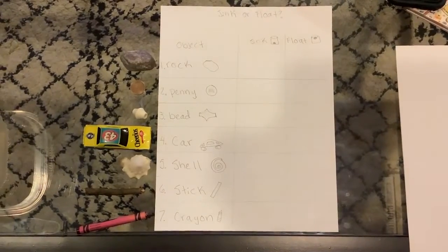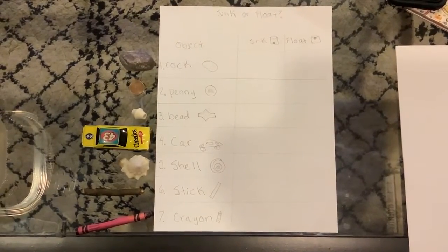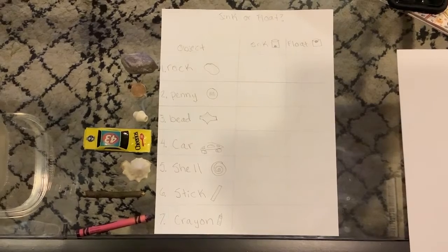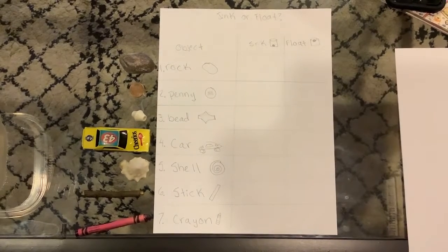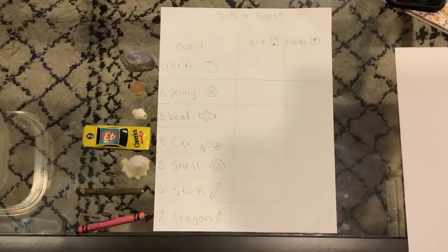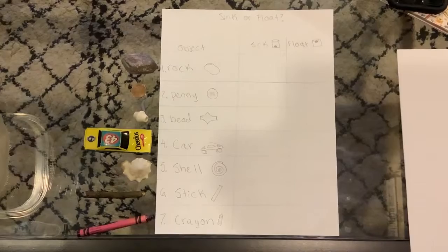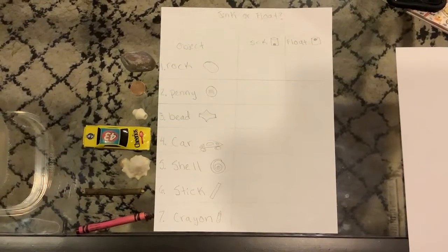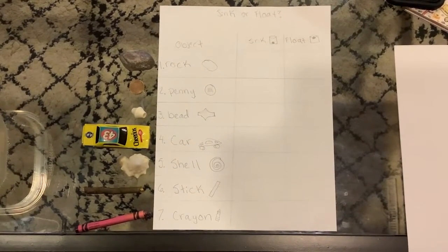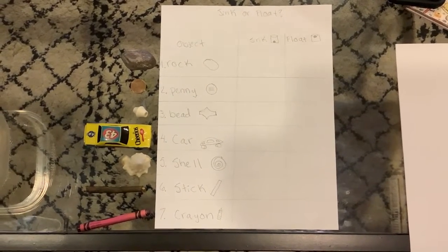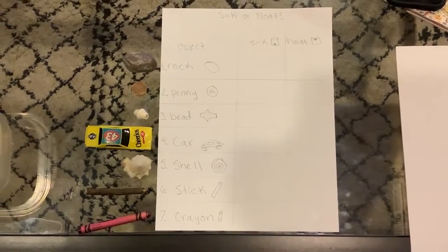And I also made a chart of my different objects. I drew a picture and I wrote down what my different objects are, and then I made a column for sink and a column for float. When I find out if they sink or float, I'm going to mark that in the columns. If you want, you can make your own chart — you can either write down the word if you're working on your writing, or you can draw a picture of the different objects.